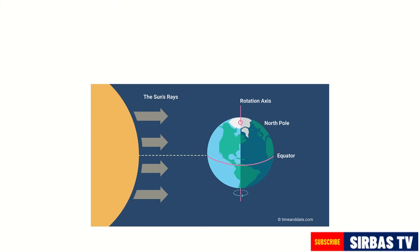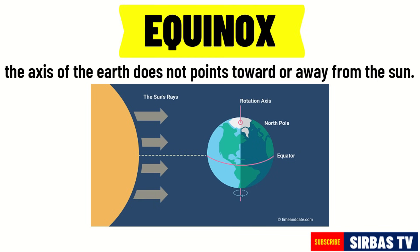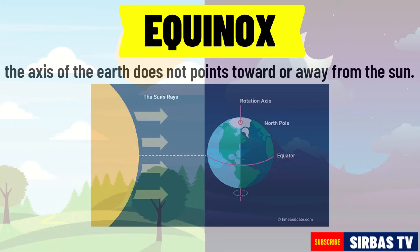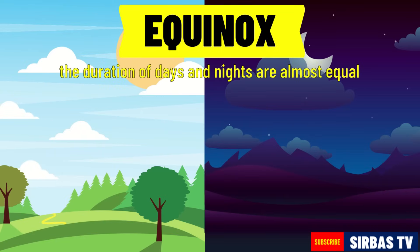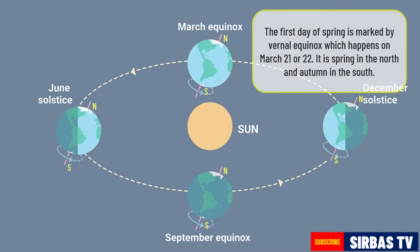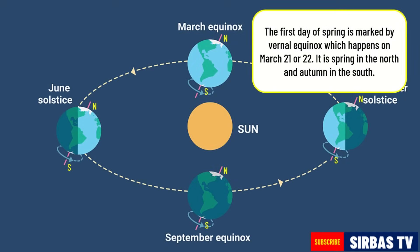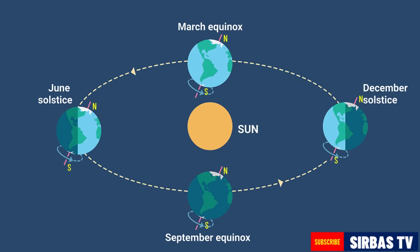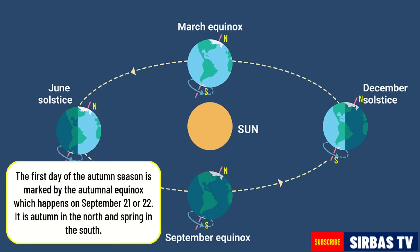When the axis of the Earth does not point either toward or away from the sun, an equinox occurs. During an equinox, the duration of days and nights are almost equal. The first day of spring is marked by the vernal equinox, which happens on March 21 or 22 — it is spring in the north and autumn in the south. Meanwhile, the first day of autumn is marked by the autumnal equinox, which happens on September 21 or 22 — it is autumn in the north and spring in the south.